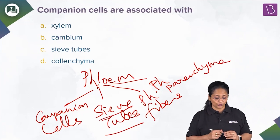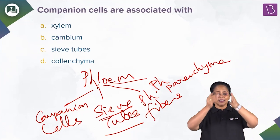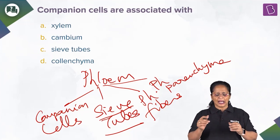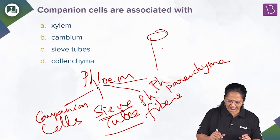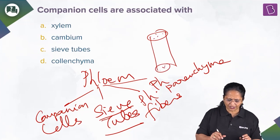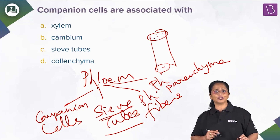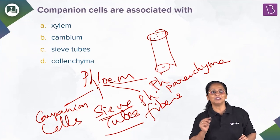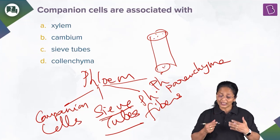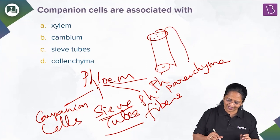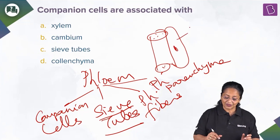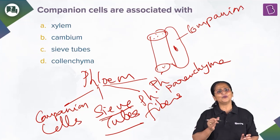Phloem is the food-conducting tissue and the sieve tube is elongated — imagine a straw, that's how it looks. It's a tube-like structure with sieve plates on both ends that are perforated. The sieve tube has a very unique feature: it is the only plant cell that is enucleated — it does not have a nucleus. Its functions are supported by its companion cell, which is always with it.